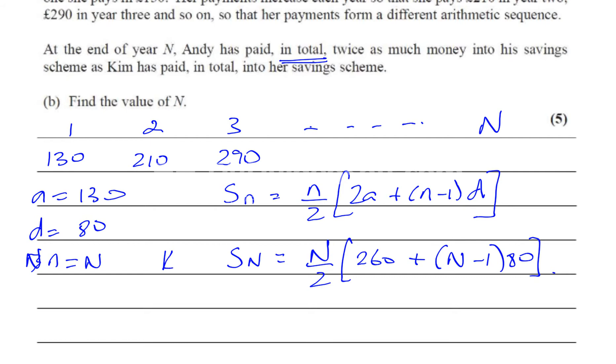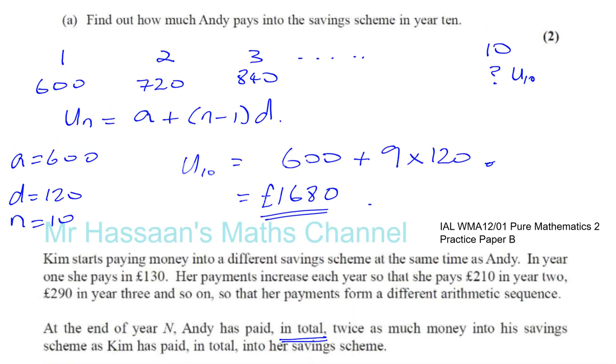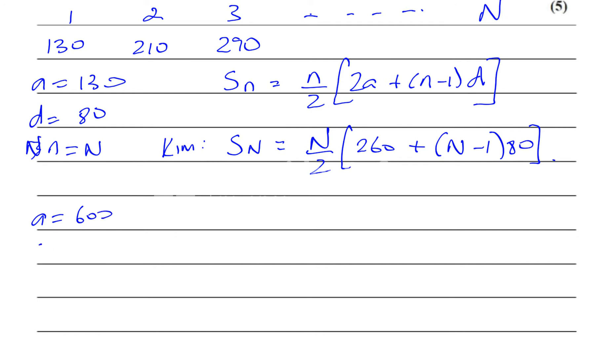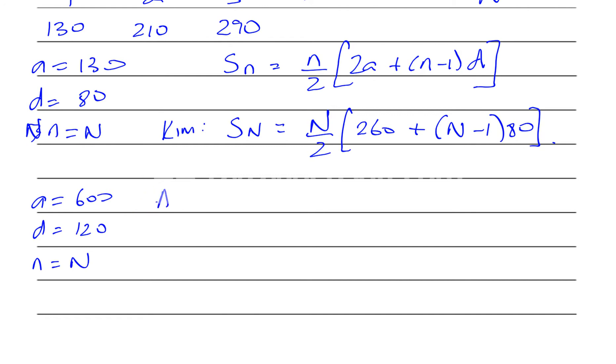For Andy, his first term was £600 and his common difference was £120. We're finding the sum for the same year N. Andy's sum for year N is going to be N/2 × [2(600) + (N-1)120].